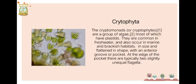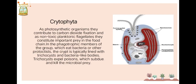The Cryptophyta — cryptomonads or cryptophytes — are a group of algae most of which have plastids. They are common in freshwaters and also occur in marine and brackish habitats. They are small and flattened in shape, with an anterior groove or pocket at whose edge there are two slightly unequal flagella. As photosynthetic organisms, they contribute to carbon dioxide fixation; as non-toxic planktonic flagellates, they are important prey in the food chain. In phagotrophic members, which eat bacteria or other protists, the cryptomonad is typically lined with trichocysts that expel poisons to subdue and kill microbial prey.